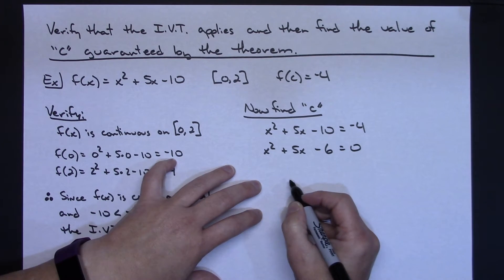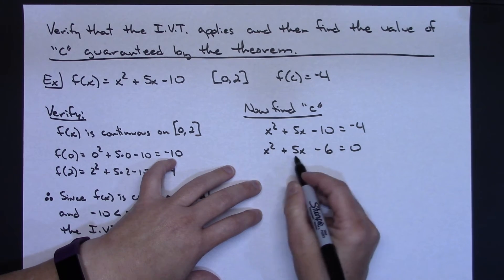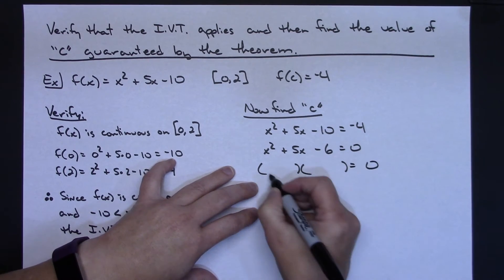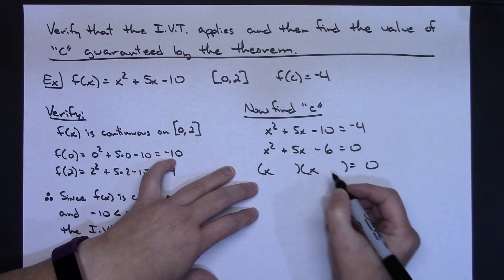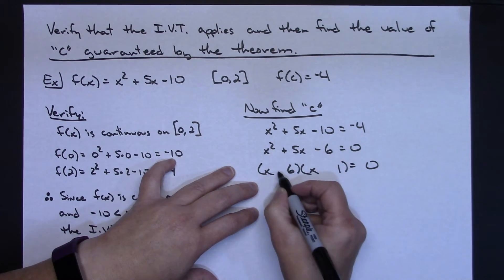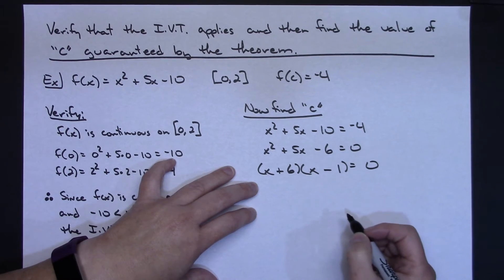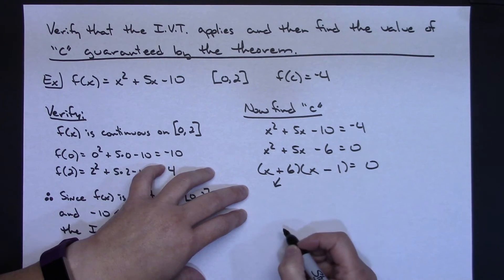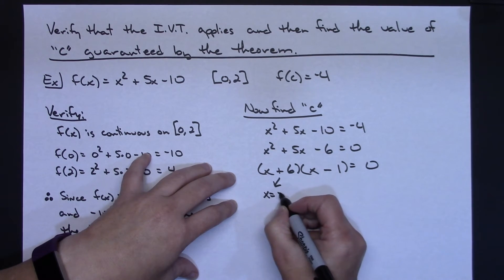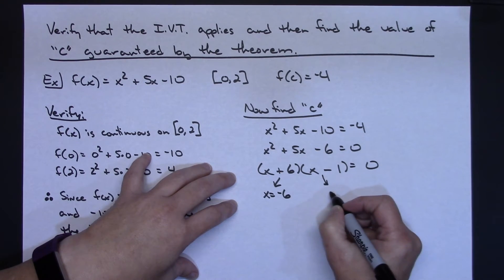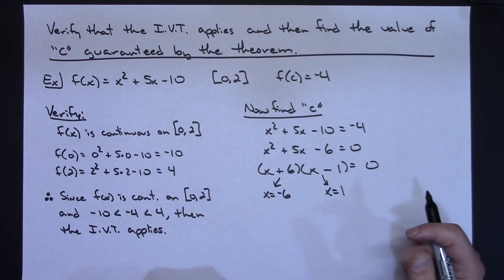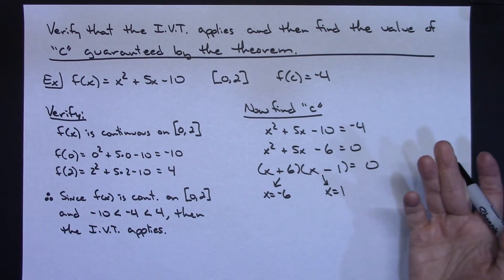This is a nice trinomial, and 6 and 1 will work. Factoring it gives (x + 6)(x - 1) = 0. Setting each factor equal to zero, I get x equals negative 6 and x equals 1. These are the possible values for C.